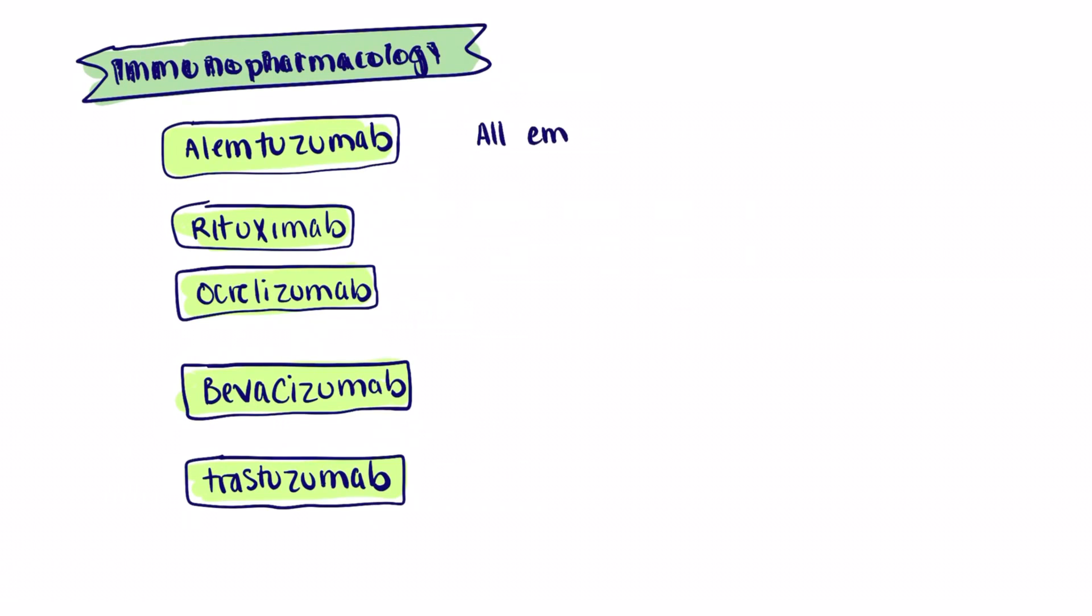Starting off with alemtuzumab, I use the mnemonic olum because it depletes all of them - the B cells, the T cells, and NK cells causing profound leukopenia.